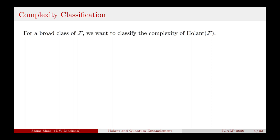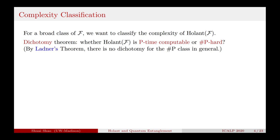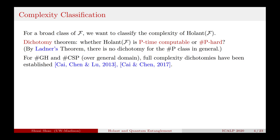For a broad class of signature sets, we want to classify the complexity of the Holant problem. Such a classification result is usually in the form of a dichotomy theorem, which says that the Holant problem is either polynomial-time computable or is #P-hard. The #P class is the quantitative version of NP. Note that by Ladner's theorem, there is no dichotomy for the #P class in general. However, for specific counting frameworks such as counting graph homomorphisms and counting CSP, complexity dichotomies have been established. The dichotomy for counting graph homomorphisms was finally proved by Cai, Chen, and Lu, and the dichotomy for counting CSP was proved by Cai and Chen.